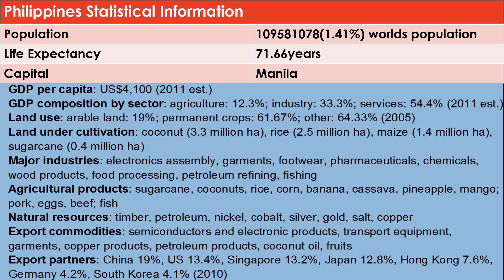Since the Philippines is included in developing countries, let's look at its statistical information. The Philippines contributes 1.41% to the world's population. Life expectancy is 71.66 years old, and the capital is Manila. Major industries include electronics, garments, footwear, pharmaceuticals, chemicals, and food products. Agricultural products include sugarcane, coconuts, rice, corn, banana, cassava, and pineapple. Natural resources include timber, petroleum, nickel, cobalt, silver, and gold.